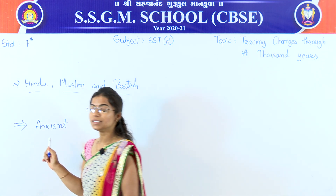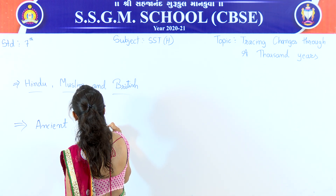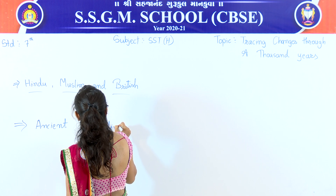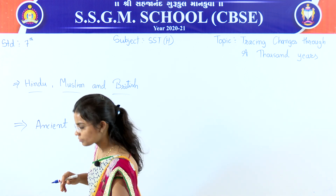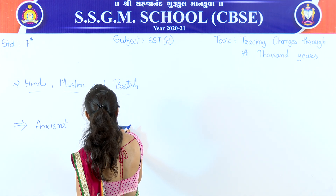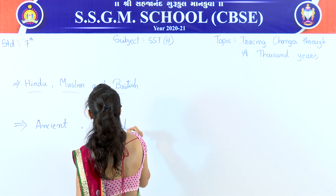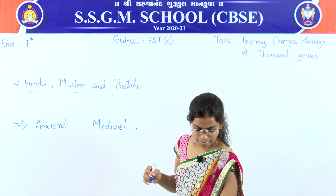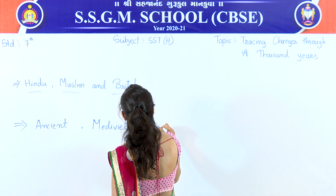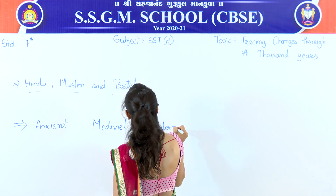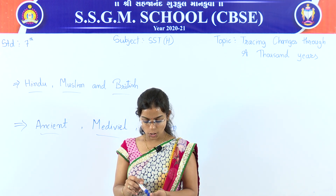The first one is ancient, the second one is medieval, and the third one is modern. These are the three periods: ancient, medieval, and modern.